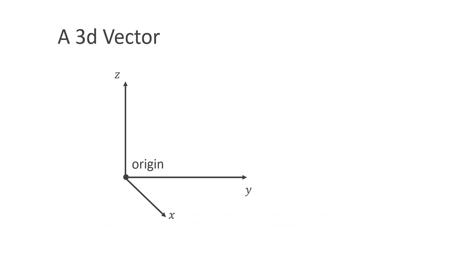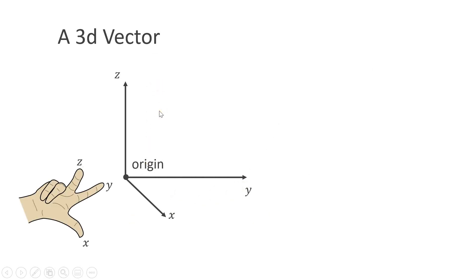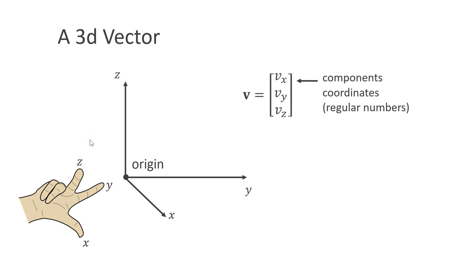In order to be able to work in three-dimensional space, we need a coordinate system. Here we have the x and the y-axis on the ground and the z-axis pointing upwards. We typically use a right-handed coordinate system, which means if the x-axis points along the thumb and the y-axis points along the index finger, then the z-axis points along the middle finger. A vector is just a combination of three components or coordinates. We can write them in column form surrounded by square brackets, or as a single symbol — but then we use boldface.